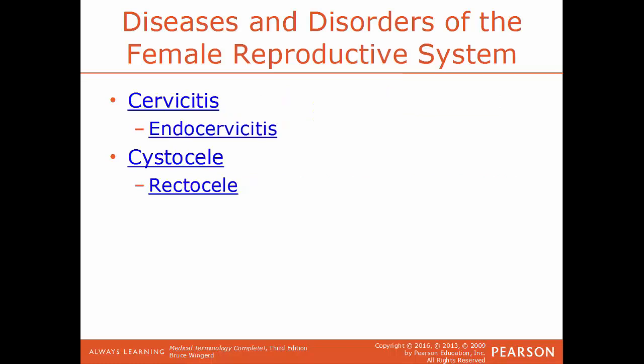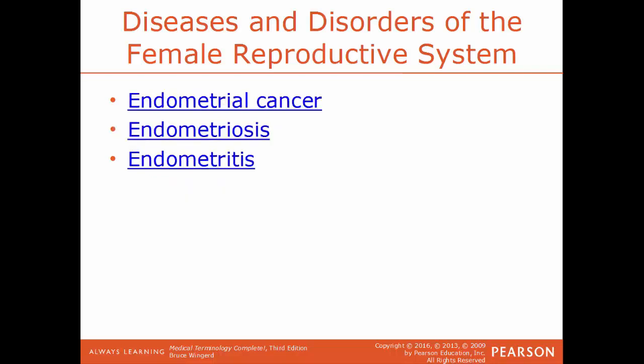Cervicitis is an inflammation of the cervix. Endocervicitis is the inflammation of the innermost portion of the cervix. Cystocele is a bulge of the bladder into the vagina. A rectocele is where you have a herniation of the front wall of the rectum into the vagina. Endometrial cancer is cancer of the endometrium, the innermost lining of the uterus. Endometriosis is a condition where endometrial tissue appears outside of the uterus, causing a great amount of pelvic pain. Endometritis is the inflammation of the endometrium.